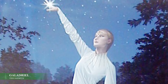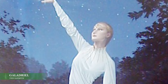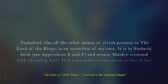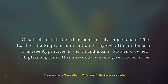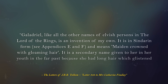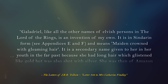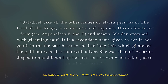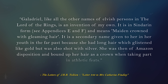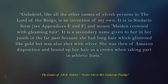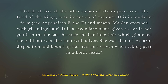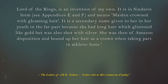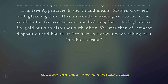If we go and look at one of Tolkien's letters, dated March 6th, 1973, he begins by explaining Galadriel's name: 'Galadriel, like all the other names of elvish persons in the Lord of the Rings, is an invention of my own. It is in Sindarin form and means maiden crowned with gleaming hair. It is a secondary name given to her in her youth in the far past, because she had long hair which glistened like gold and was also shot with silver. She was then of Amazon disposition, and bound up her hair as a crown when taking part in athletic feats.'